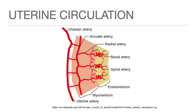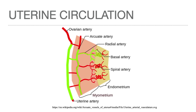The uterus is supplied by the uterine artery, which gives off the arcuate arteries that take a circumferential course in the middle of the myometrium. Penetrating branches called the radial arteries give off lateral branches called the basal arteries, which supply the basales of the endometrium. These basal arteries continue as coiled or spiral arteries that supply the functionalis layer. The spiral arteries are sensitive to changes in hormone levels and play a role in menstruation.